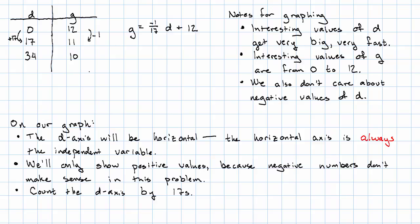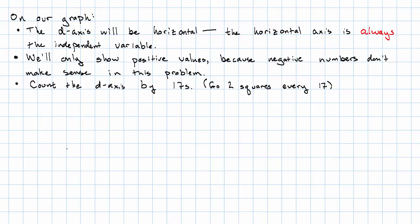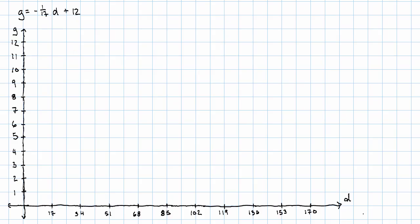But, you know, 17 is a lot bigger than 1. And to give some of that appearance, I'm going to skip two squares every 17. So here's what my graph is going to look like. Again, this is the graph of G equals negative 1/17th D plus 12. So there are my axes. Notice that this graph came out pretty big. If I wanted to make this a little bit smaller, I might count by 2s on the G axis. And then only skip 1 every 17 on the D axis.